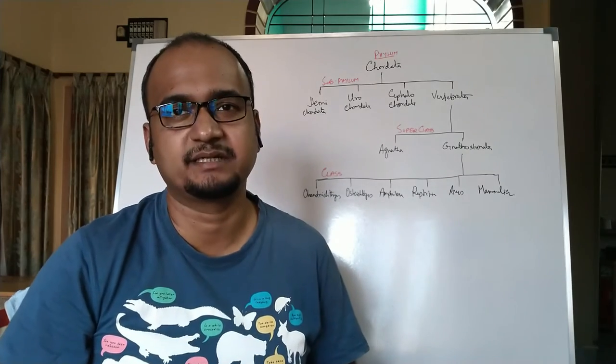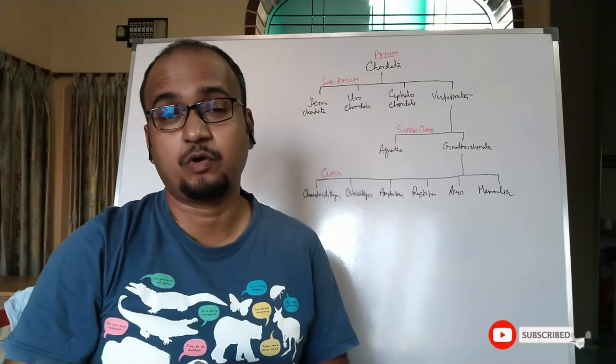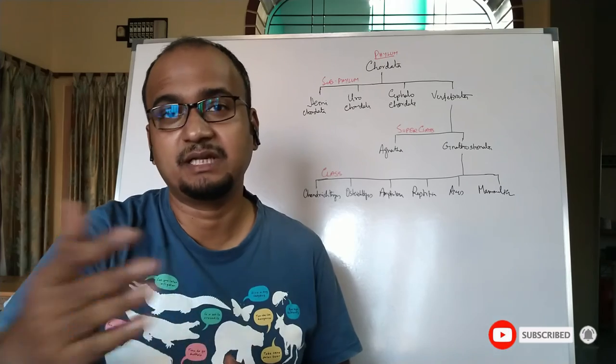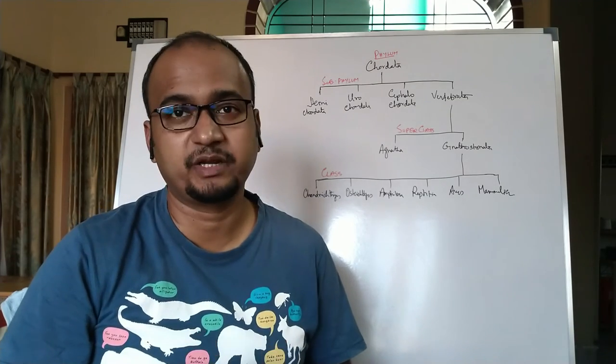Notochord is rod-like and persistent throughout life. As I said before, notochord is extended to the anterior part of the body even beyond the nerve cord, that's why the name Cephalochordata. Excretion through protonephridia. The example is Branchiostoma.